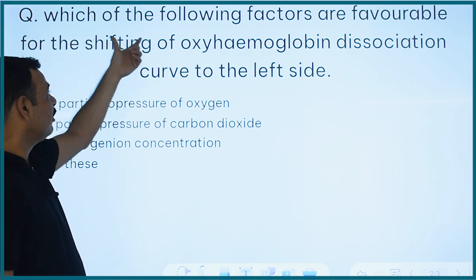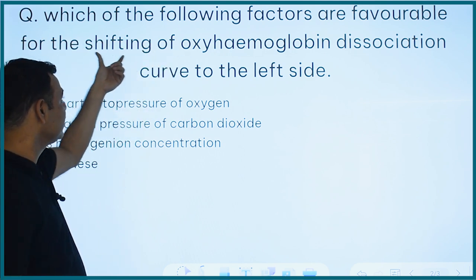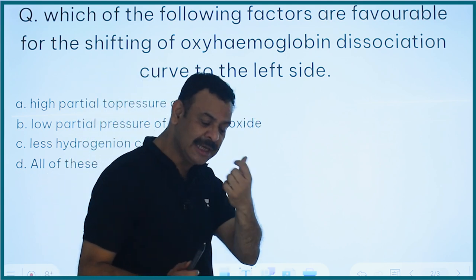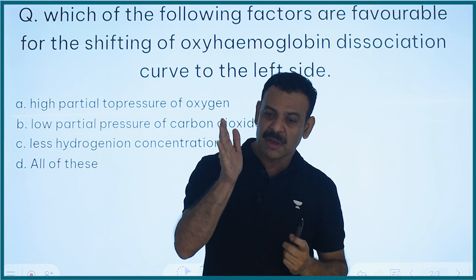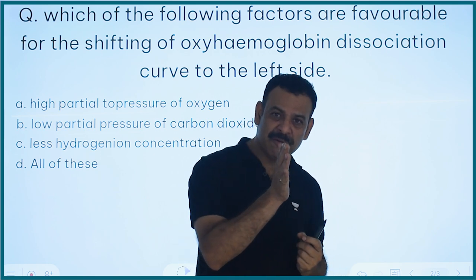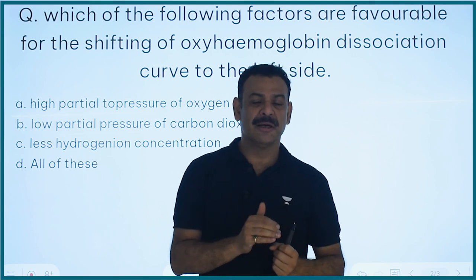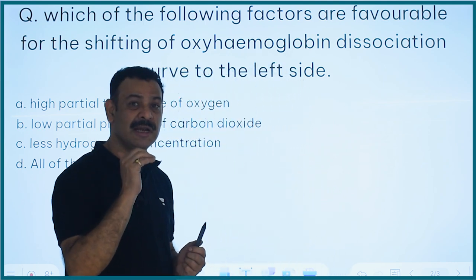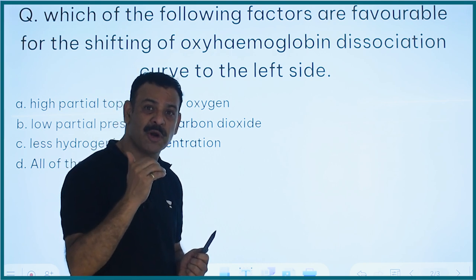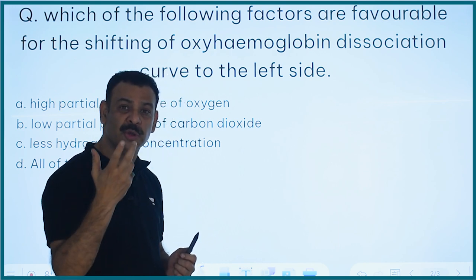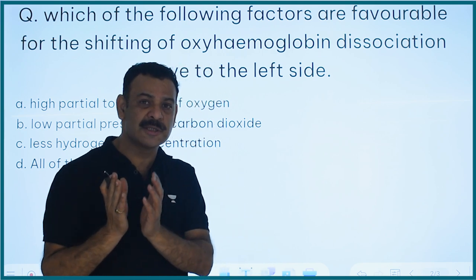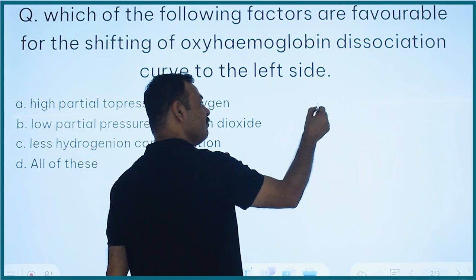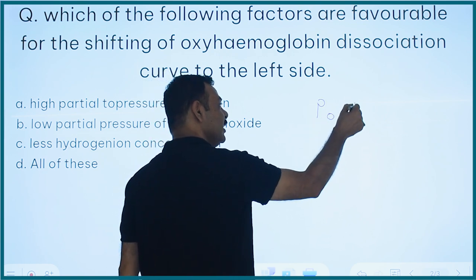So, which of the following factors are favorable for the shifting of the oxyhemoglobin dissociation curve towards the left side? This means hemoglobin has more affinity with oxygen, and the left-side shifting means more formation of oxyhemoglobin. The first factor is: partial pressure of oxygen should be more.